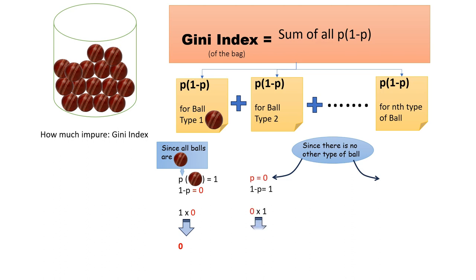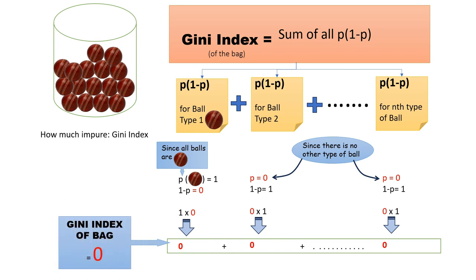And the term p will be 0 for the colors absent, hence G will be 0 if only one type of ball is present in the bag, irrespective of the color. So now you know how to find Gini index for every bag.